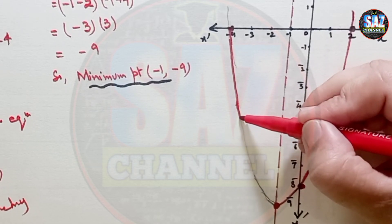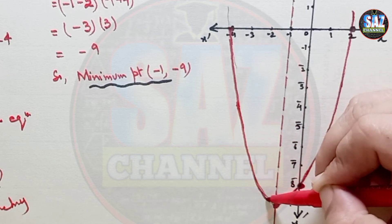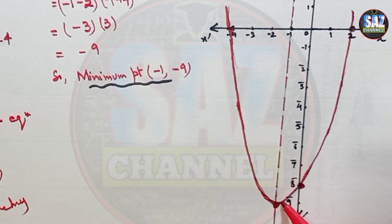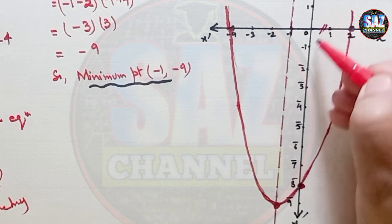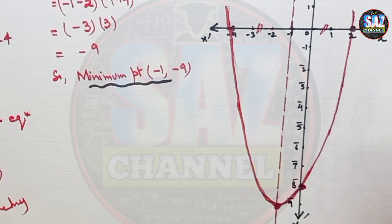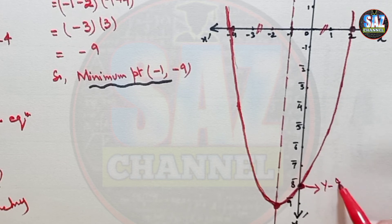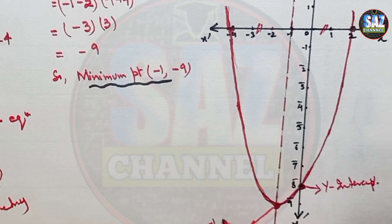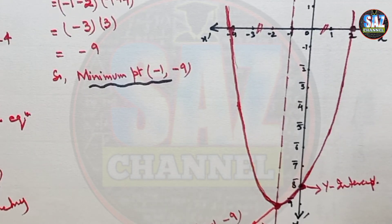Students, you can see that if we keep the basic six steps in mind, we can easily attempt questions on sketching parabolic or quadratic curves. The equal distances from the line of symmetry to each x-intercept are visible here. This is the y-intercept, and you must label all positions. This is the minimum point at (−1, −9), along with the line of symmetry and the two x-intercepts.